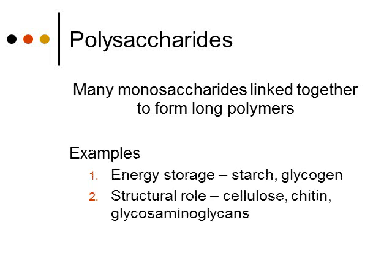Examples of polysaccharides used for energy storage include starch, which you find in potatoes and other plants — that's how plants store energy. Another type of energy storage is glycogen, which is how humans store energy, and this is usually short-term energy storage. If you start to get hungry, your body's going to start to break down the glycogen stored in the liver.